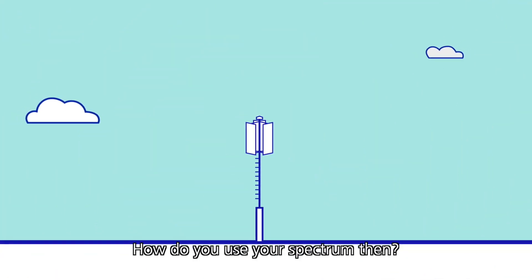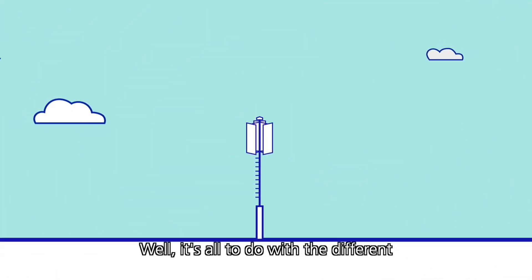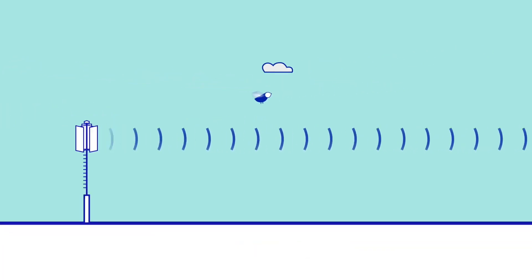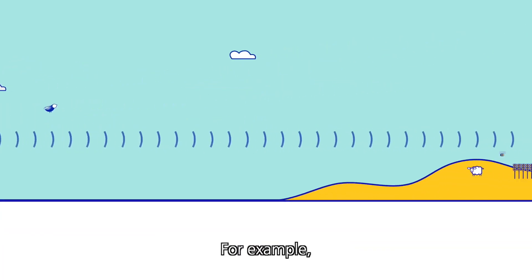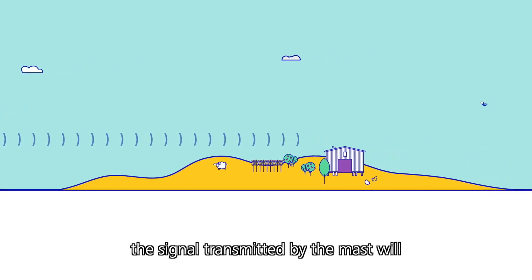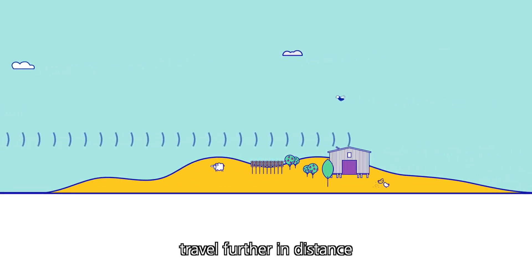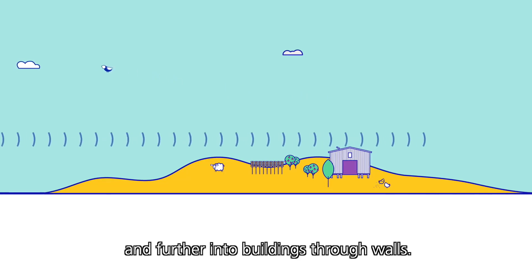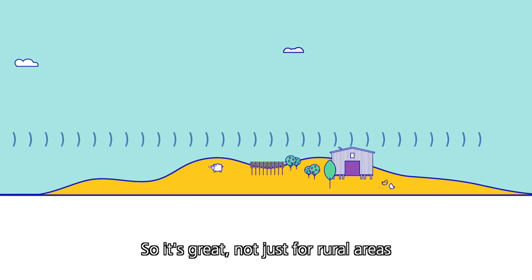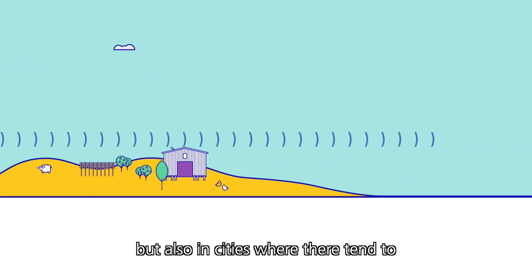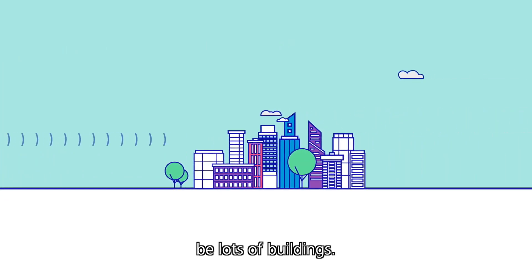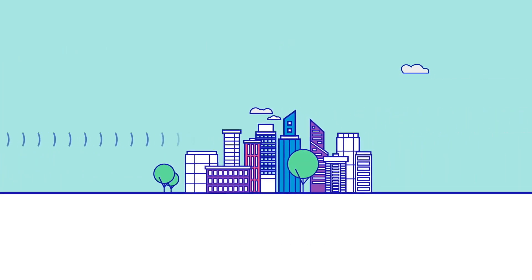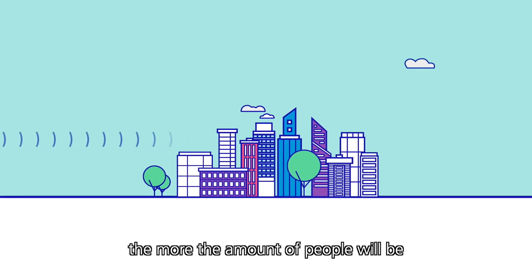How do you use your spectrum? It's all to do with the different frequencies we have and the way they act in different environments. For example, if the spectrum frequency is low, the signal transmitted by the mast will travel further in distance and further into buildings through walls — so it's great not just for rural areas but also in cities where there tend to be lots of buildings.